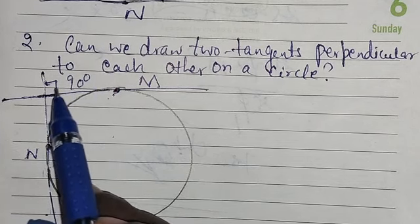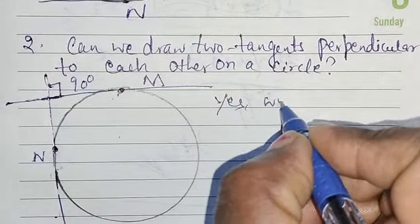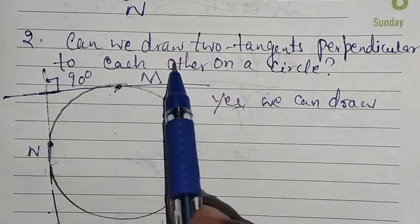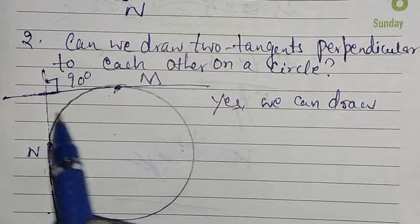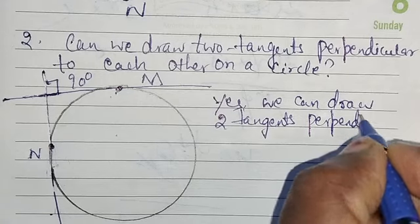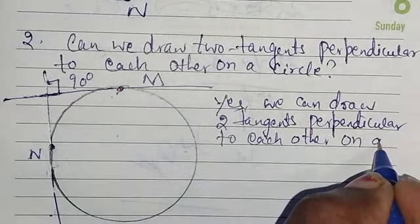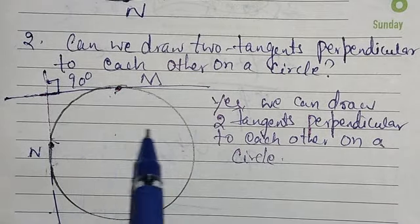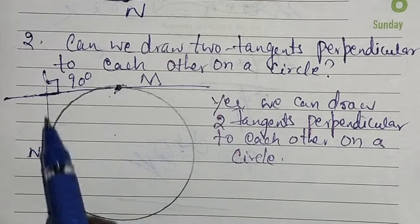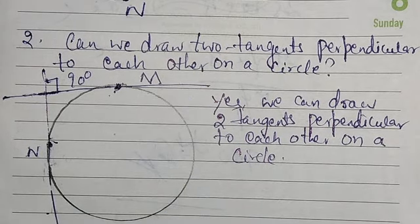The angle is 90 degrees, so it is perpendicular. Can we draw two tangents perpendicular to each other on a circle? Yes, we can draw two tangents perpendicular to each other on a circle. That is, perpendicular to each other means 90 degrees. So, we can draw two tangents perpendicular to each other on a circle.